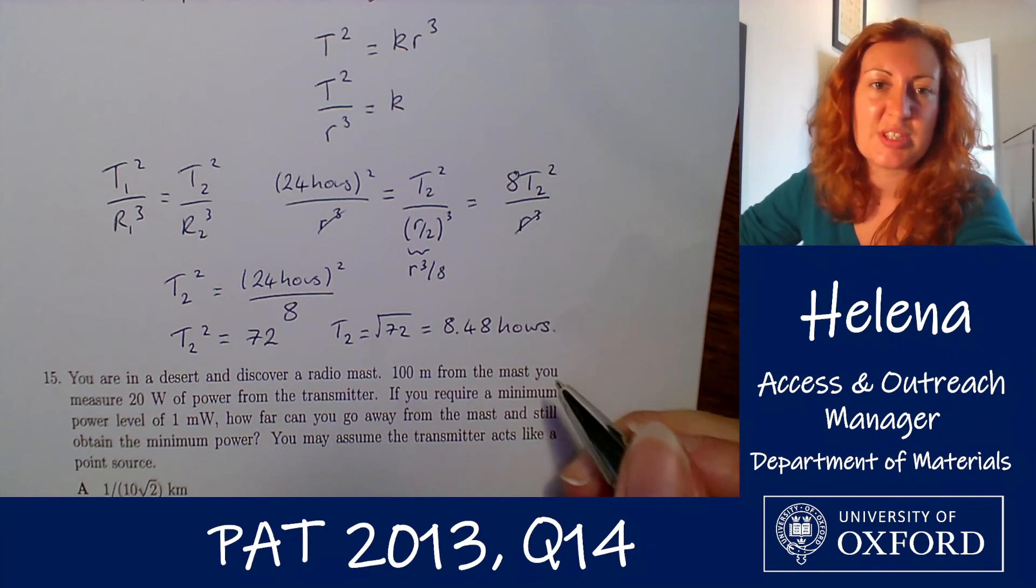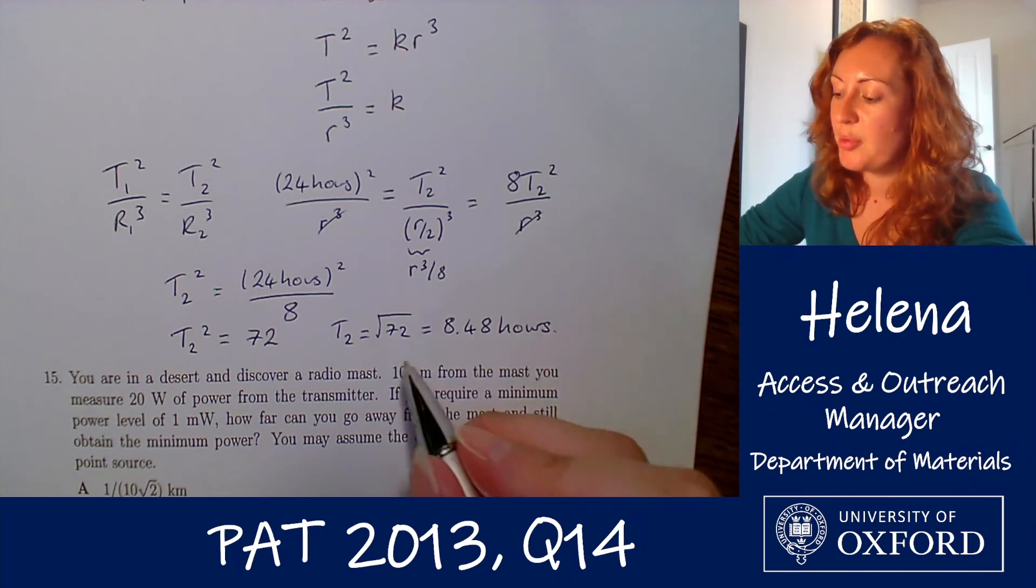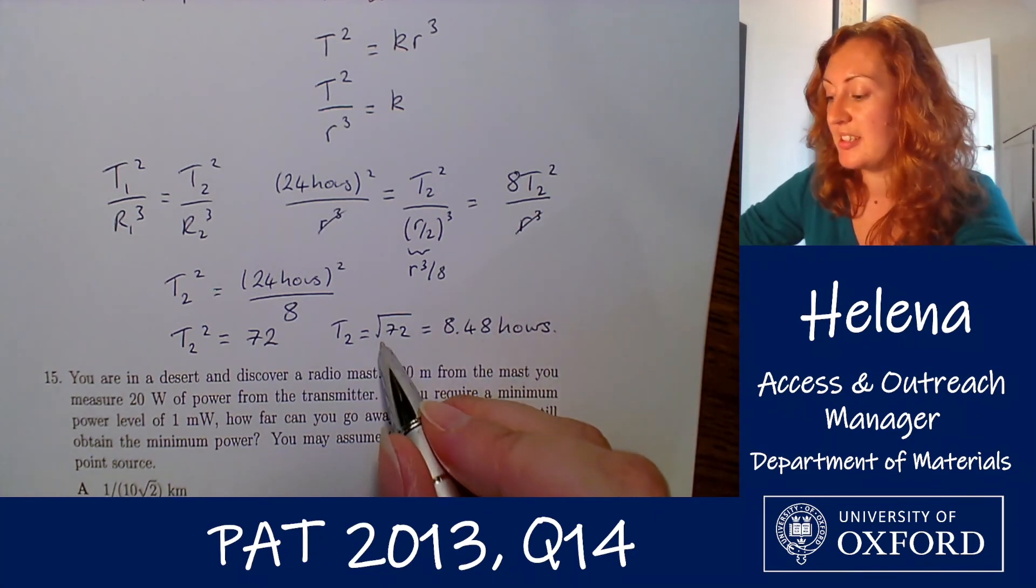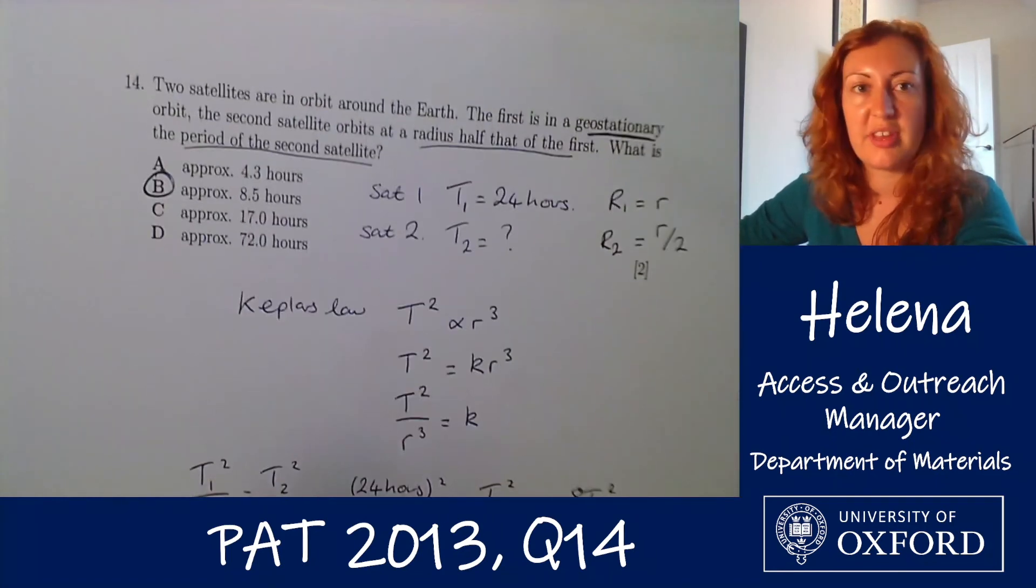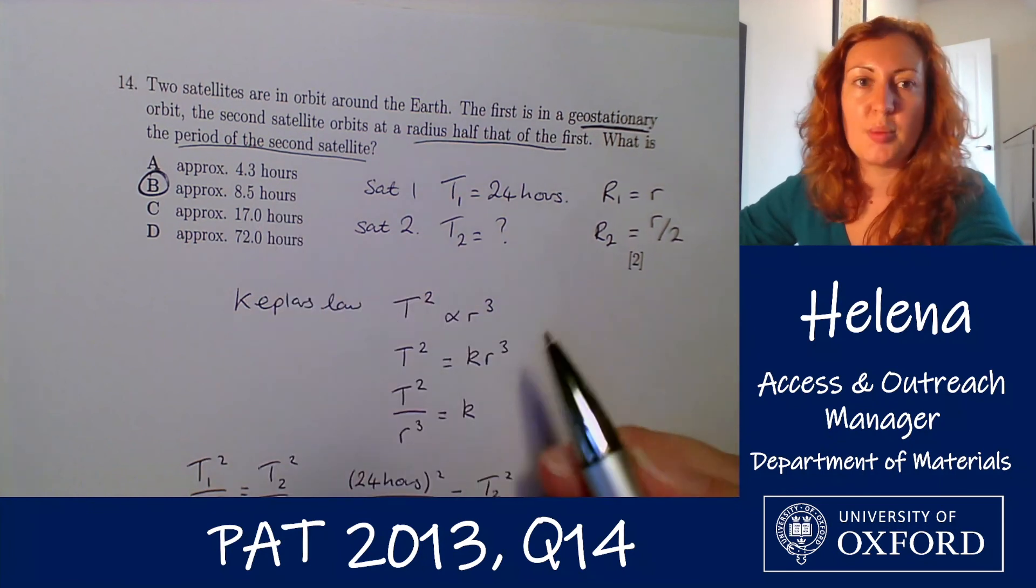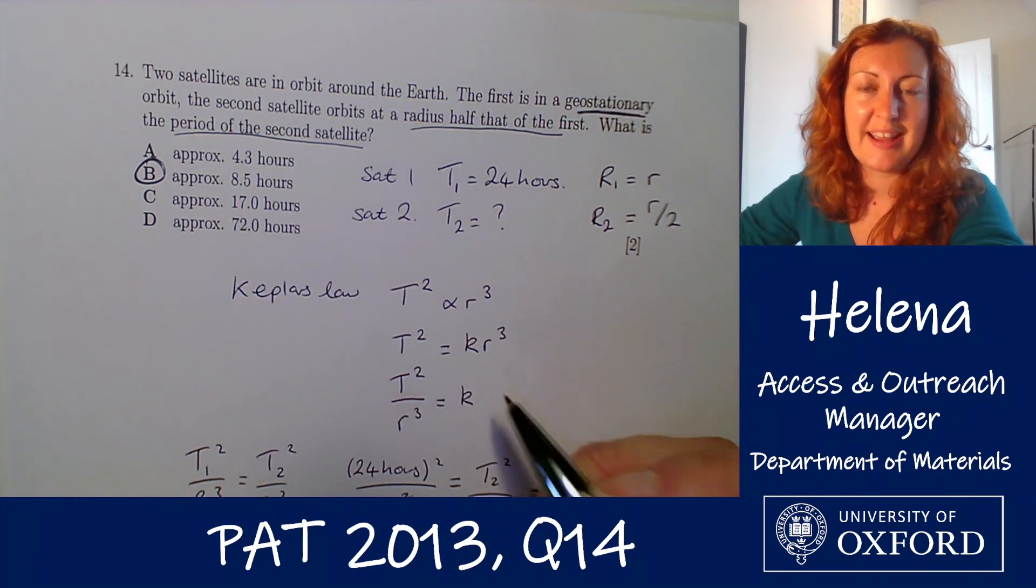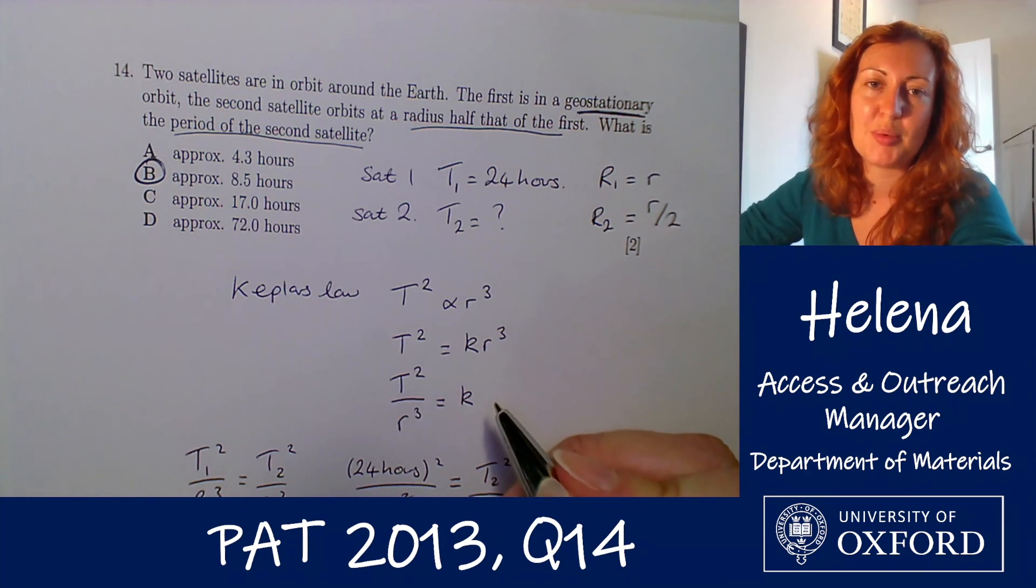Now if you didn't have a calculator which was the case when this paper was sat you'd be able to or you should be able to notice that the square root of 72 is somewhere between 8 and 9 which would therefore give us only option b as being the correct one here and that's always good to do as a quick sanity check as well even though we have calculators when we're practicing here.